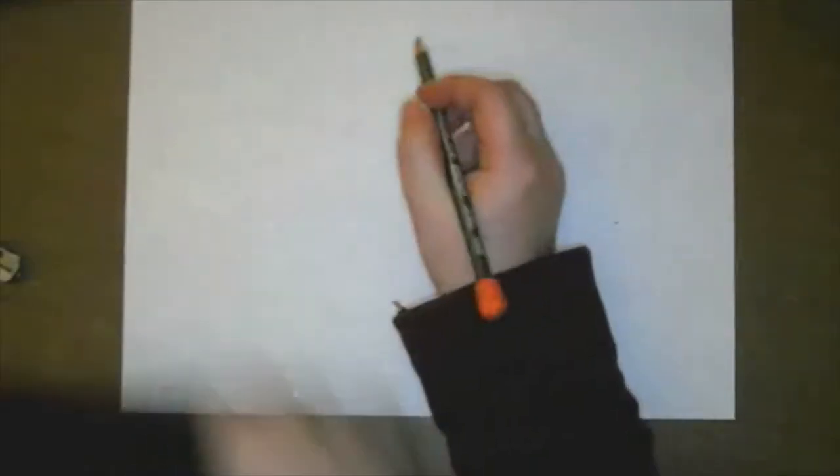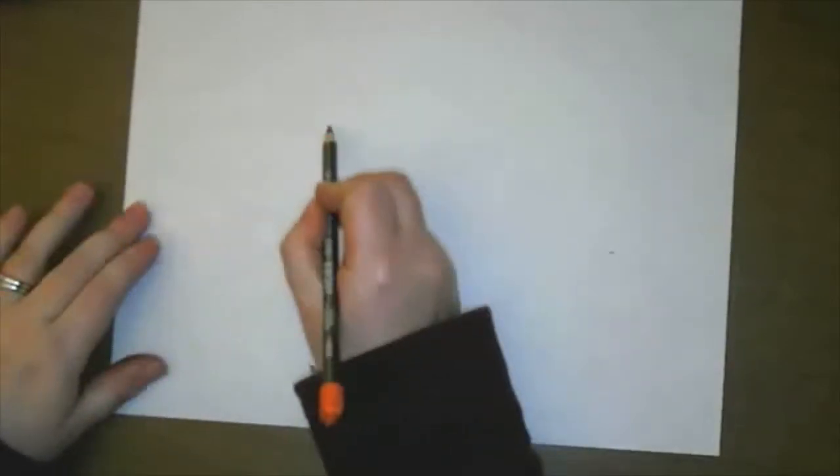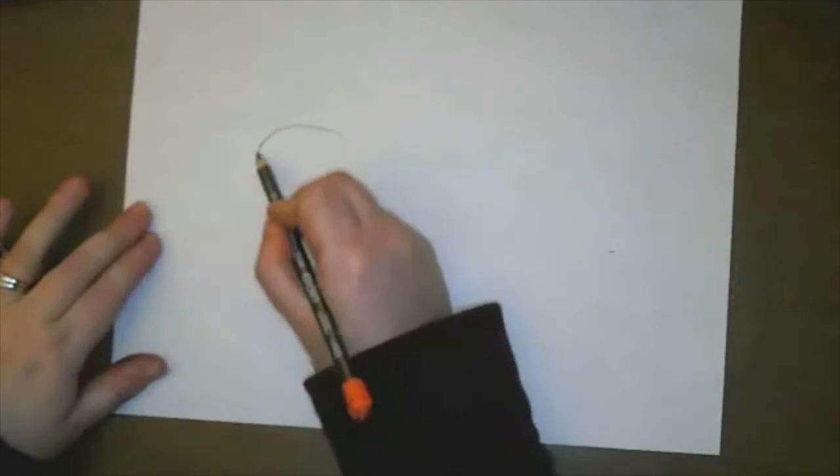Okay, we are going to draw a cow. And we're going to start off with a nice big oval shape.